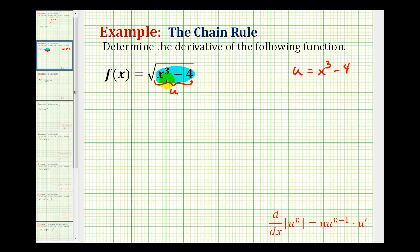Since u = x³ - 4, we can write the function as the square root of u. We know that if we have a square root, we want to rewrite it using a rational exponent, where the exponent is 1 and the index is 2, so this is equal to u to the one-half power.